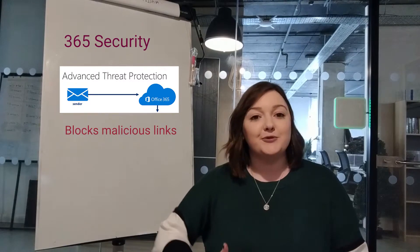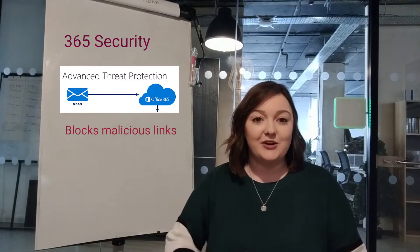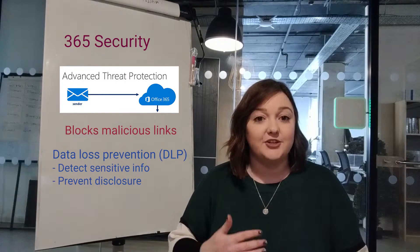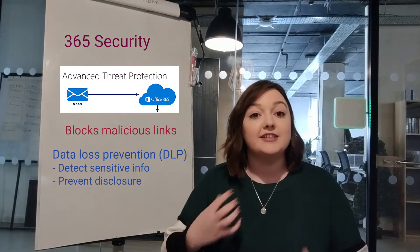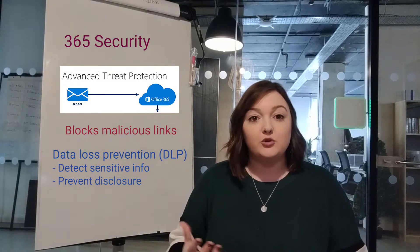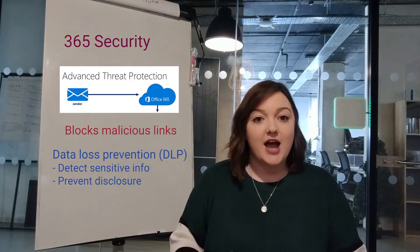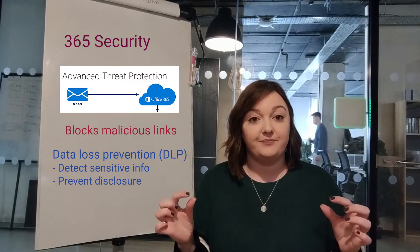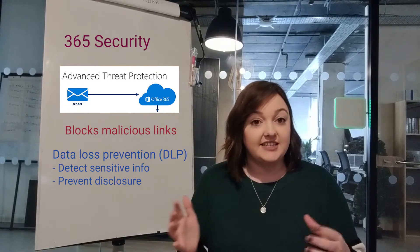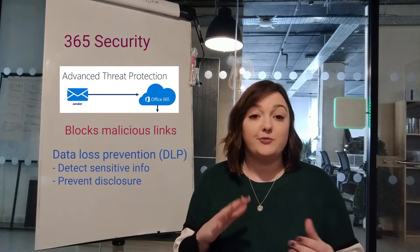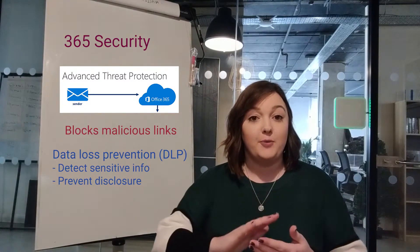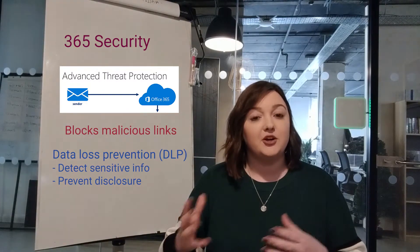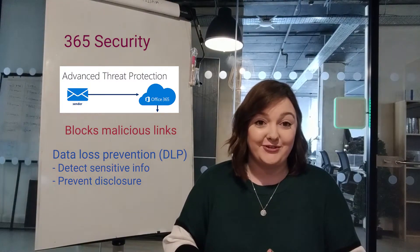You'll also have a tool called Data Loss Prevention, or DLP for short. This actually lets you identify any secure or sensitive information. So for example, if you had a 16-digit credit card number, it would recognize that that's sensitive information, and you can actually prevent that from being shared externally or being shared through email with your users.